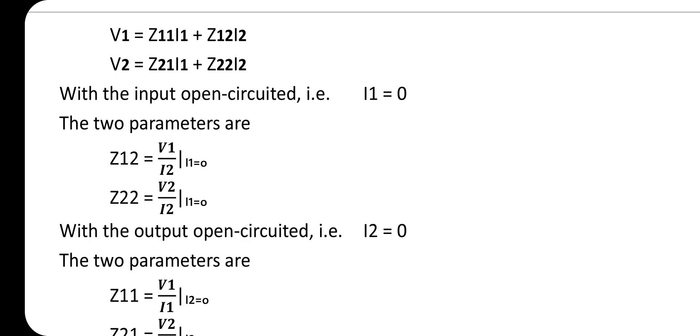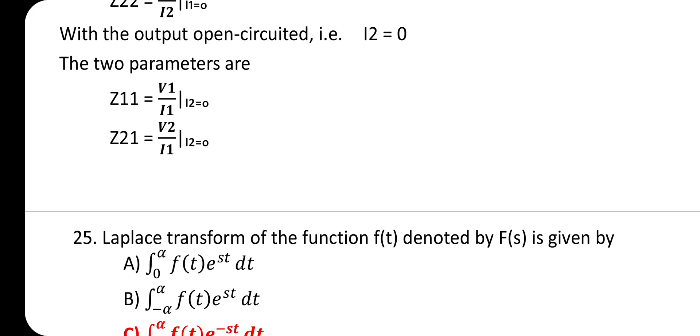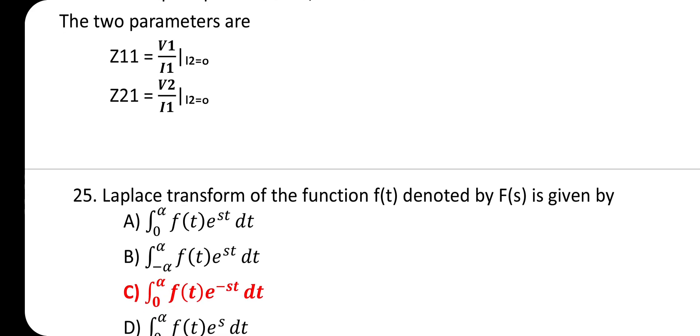With input open circuit (I1 = 0), the two parameters are Z12 = V1/I2 at I1=0 and Z22 = V2/I2 at I1=0. With output open circuit (I2 = 0), the two parameters are Z11 = V1/I1 at I2=0 and Z21 = V2/I1 at I2=0.